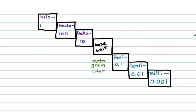If I go up the stairs, I have Deka, which is ten, Hecto, which is a hundred, and Kilo, which is a thousand.